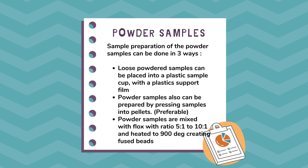Sample preparation of powder samples can be done in three ways. Loose powdered samples can be placed into a plastic sample cup with a plastic support film. However, powder samples are preferably prepared by pressing them into pellets.